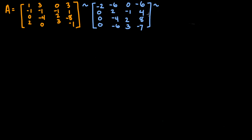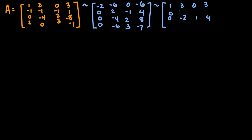Now we move to the second pivot column. To find whether the matrix has a pivot position in every row, we just need to get it to echelon form. We can scale down rows: the first row becomes 1, 3, 0, 3; the third row becomes 0, negative 2, 1, 4; we also have 0, 2, negative 1, 4; and 0, negative 6, 3, negative 7.